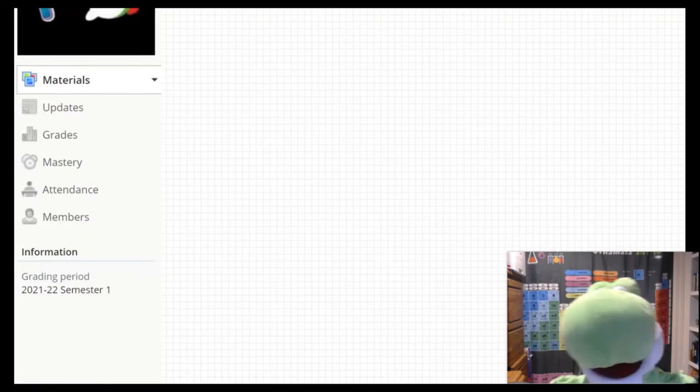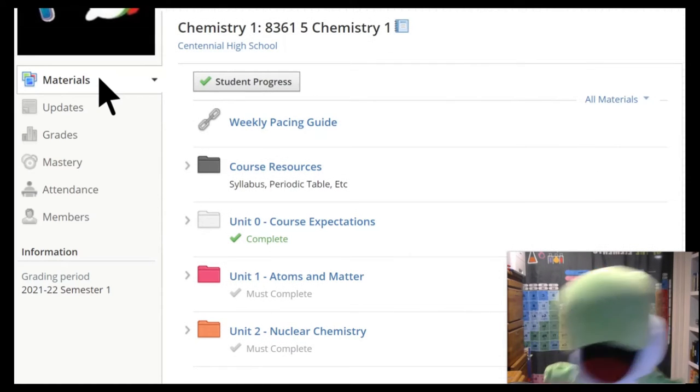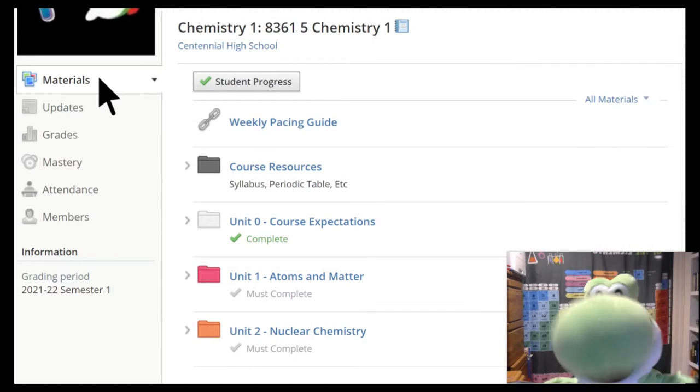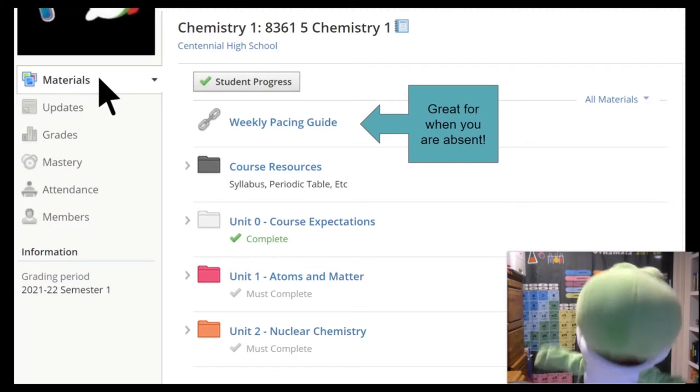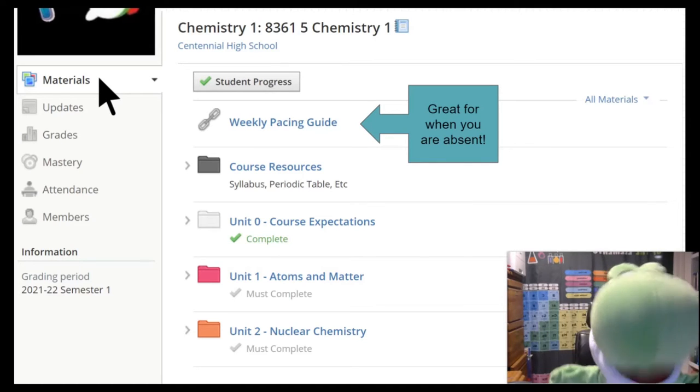When you first open Schoology, you're going to be greeted with the sidebar over on the left. Let's click the materials tab and see what we've got. Here are all the resources that we need in class. For example, the very top resource is a pacing guide. This is extremely useful if you want to know what's happening each day or if you're absent, you know what you might miss.